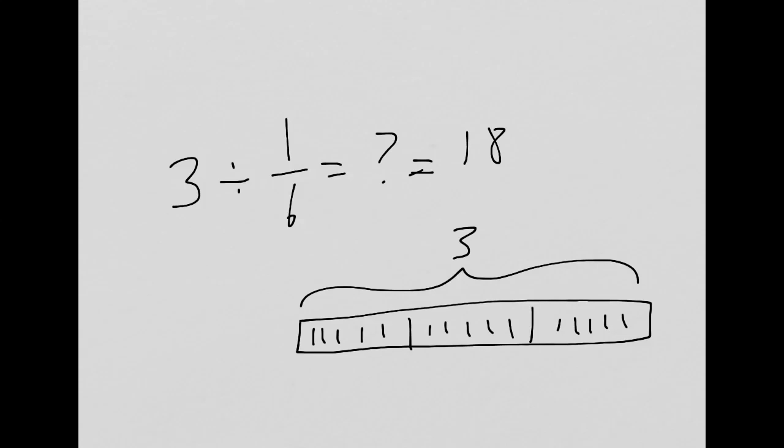And I knew that quickly because in each one, there were six of them. Now what do you notice? Here we have this curious property that what it looks like we've done is we've multiplied the whole number by the denominator of the fraction. And that's true.